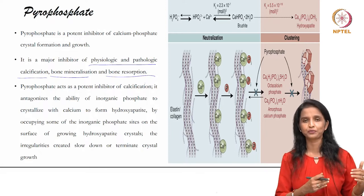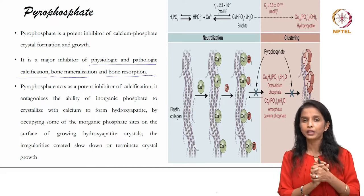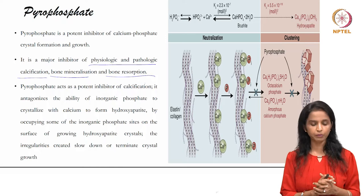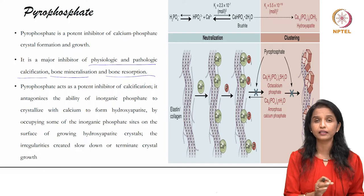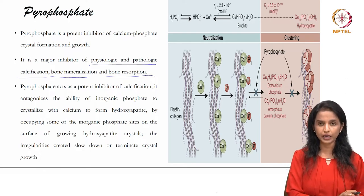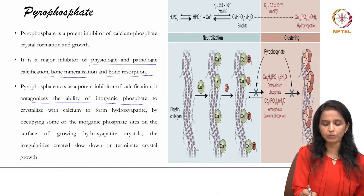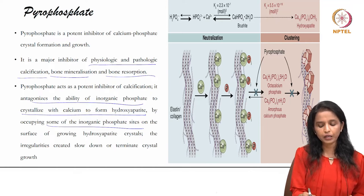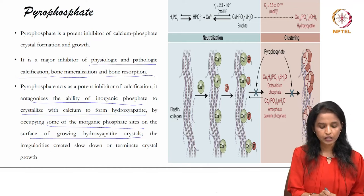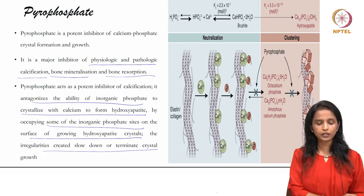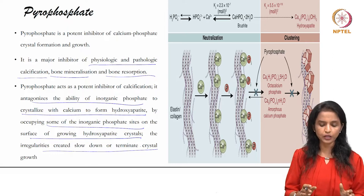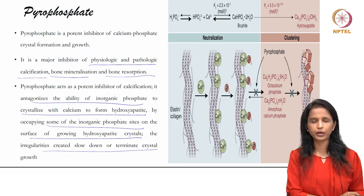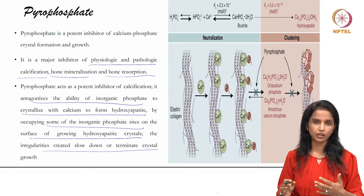Areas which have to be soft need not be mineralized. This mechanism is handled by inhibitors, and pyrophosphate is one such vital inhibitor preventing unnecessary mineralization. It antagonizes the ability of inorganic phosphate to crystallize with calcium to form hydroxyapatite by binding to the inorganic phosphate sites on the surface of growing hydroxyapatite crystals, thereby slowing down or terminating crystal growth.